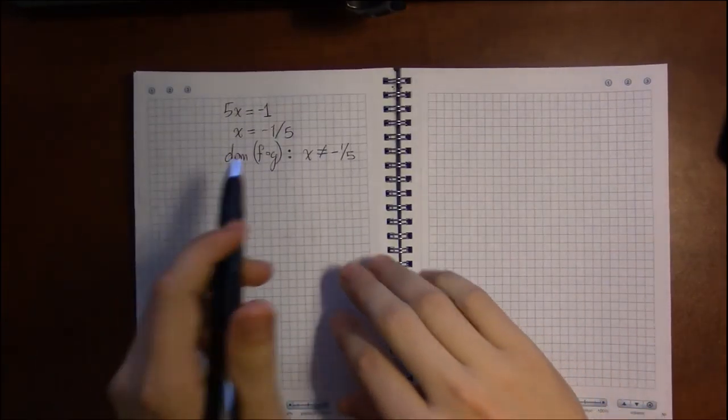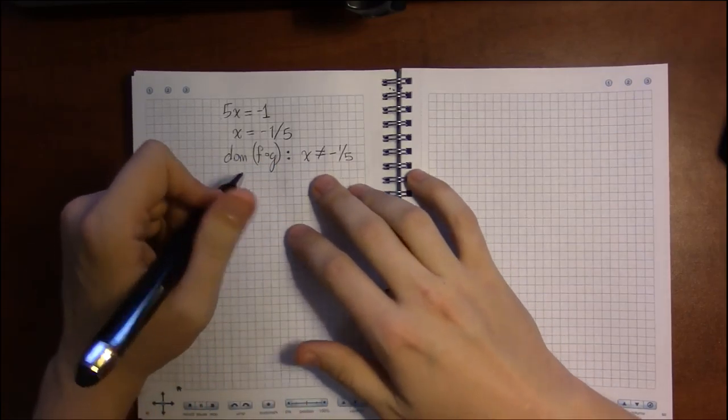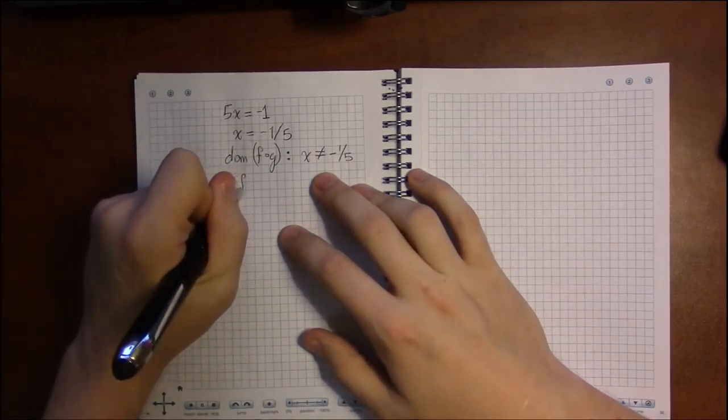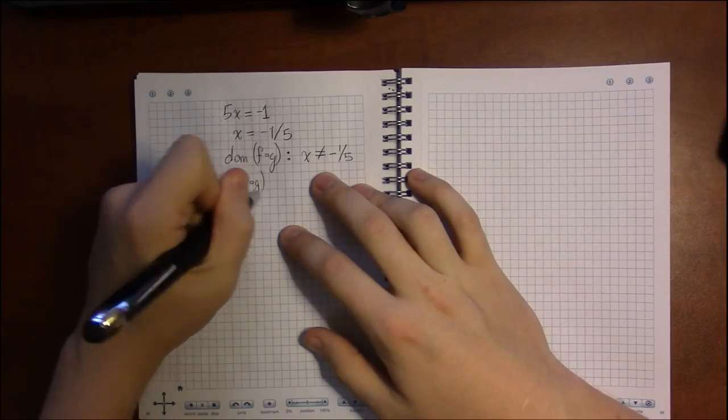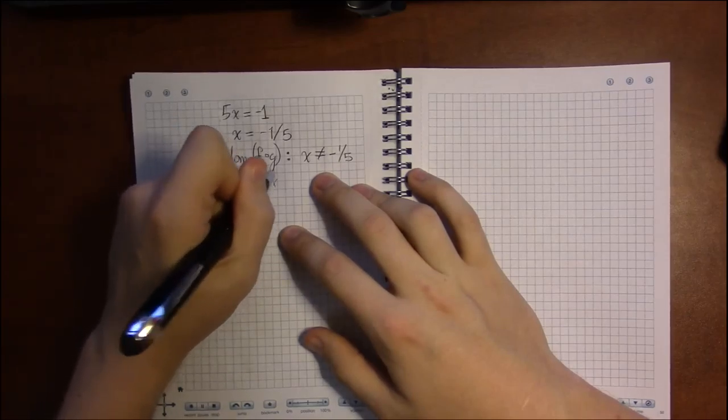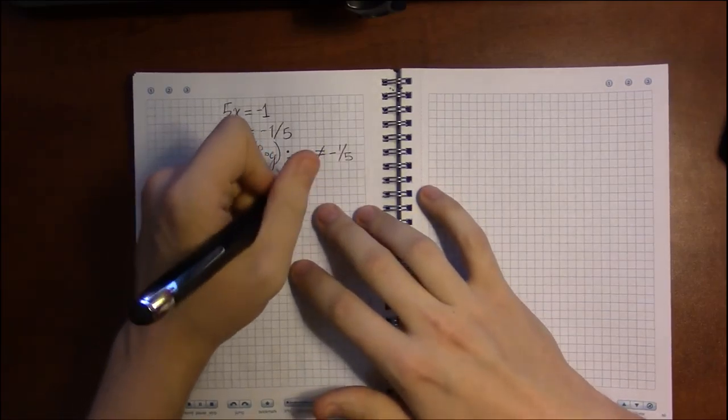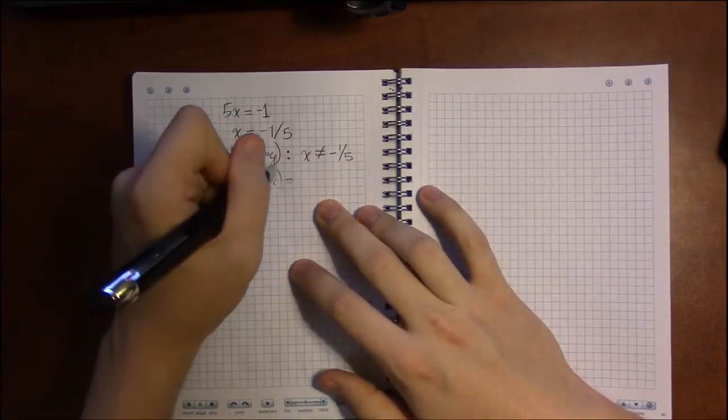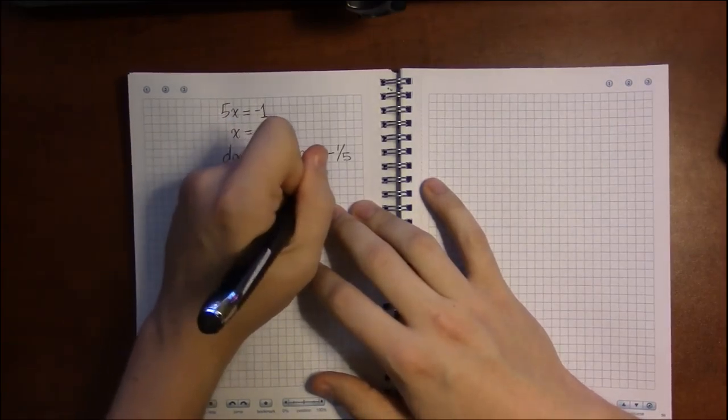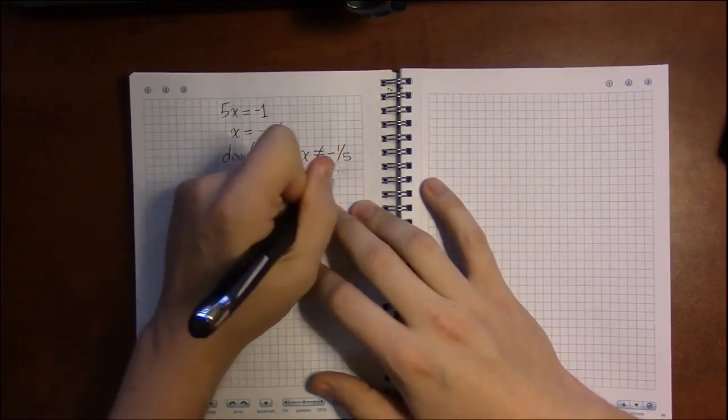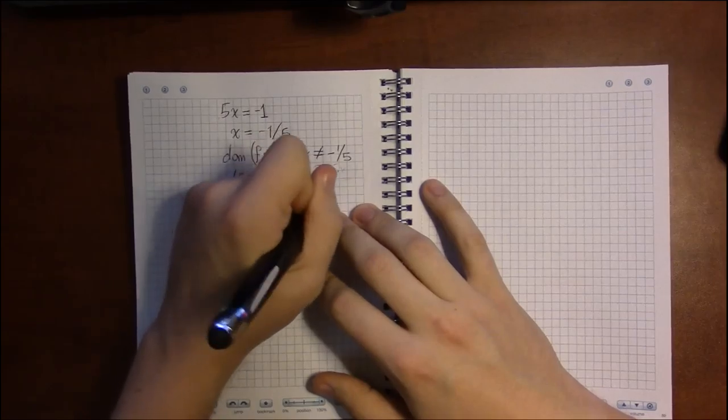So that's avoided so long as x is not equal to minus 1 fifth. And to rewrite our expression here, we get that what we have, we had 2 plus 5x over 1 plus 5x.